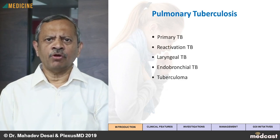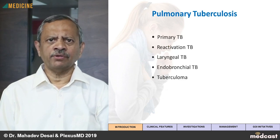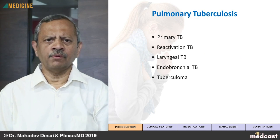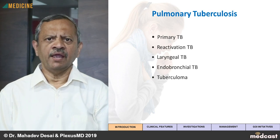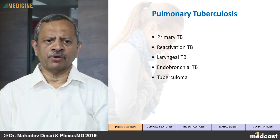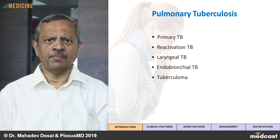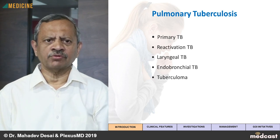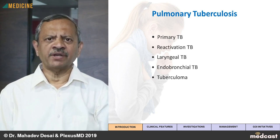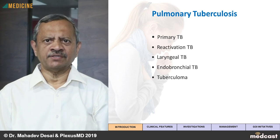When we talk of Pulmonary Tuberculosis, we are going to include Primary Tuberculosis, Reactivation Tuberculosis, Laryngeal Tuberculosis, Endobronchial Tuberculosis and Tuberculoma. But the major focus will be on Reactivation Tuberculosis, which is the main form of presentation in most adult patients.